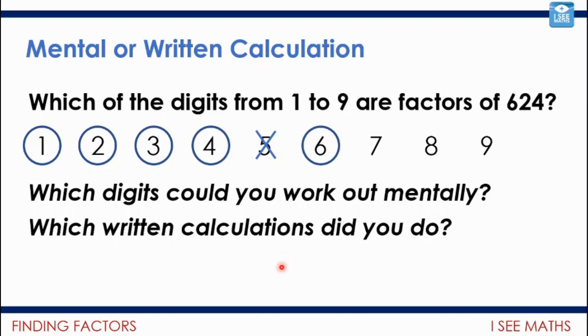4, now, actually, I can also work out that 4 is as well. And the reason that I know that 4 is, is because 4 is a factor of 100. So if I count up in 100s, 4 is always in that count. So 25 lots of 4 is 100. So 50 lots of 4 is 200. And so I know that 600, if I count up in 4s, I'll get to 600. 6 more 4s, 624.